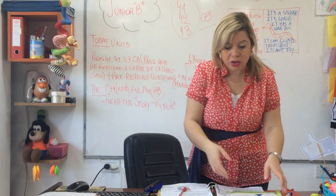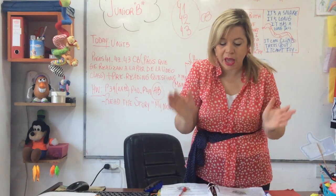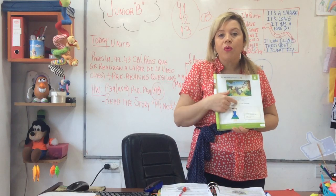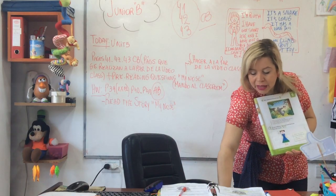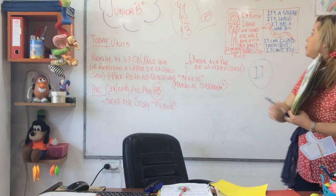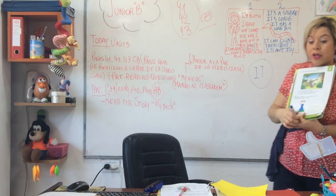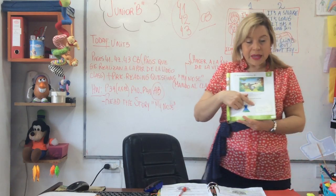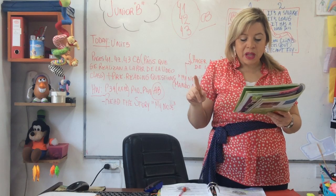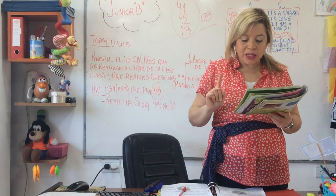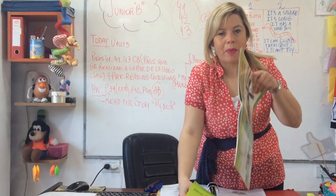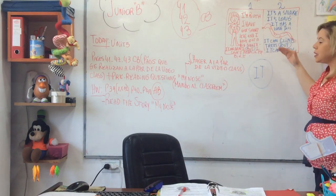Eso vas a hacer — eso es la parte que viene acá. Divide the paper in two: in one side you are going to write this, and on the other side lo otro. I have got two arms and two legs, I haven't got wings, I can sing, I can't fly. Así te tiene que quedar.